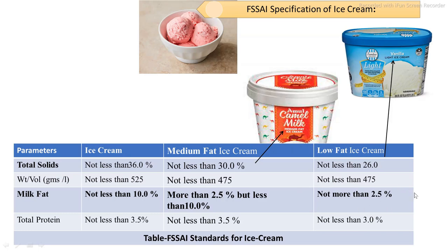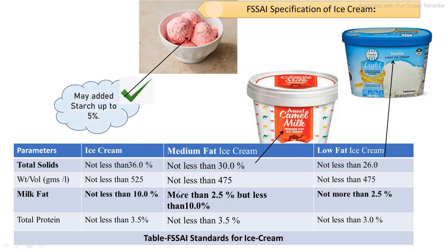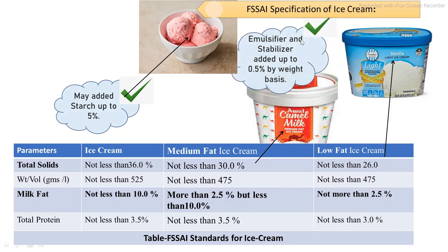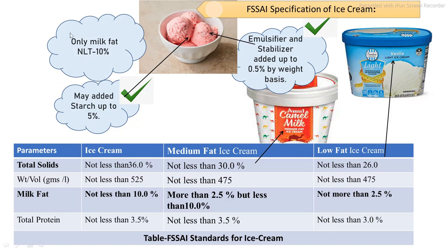Light ice cream contains fat of not more than 2.5%. As per standards, the addition of starch powder is allowed up to 5% of the total weight of ingredients. The addition of stabilizing and emulsifying agents may be added up to 5.5% of total other ingredients on a weight basis. Only milk-source fat is added — not less than 10% in real ice cream.